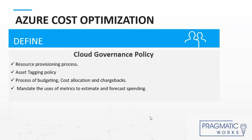Now let's talk about the first step, the define phase. When preparing to migrate to the cloud, it is essential that you implement governance policies for effective enterprise cloud management. An effective cloud governance policy will define the process for resource provisioning. You should identify someone in your organization, or a few people, that will have the ability to deploy resources.